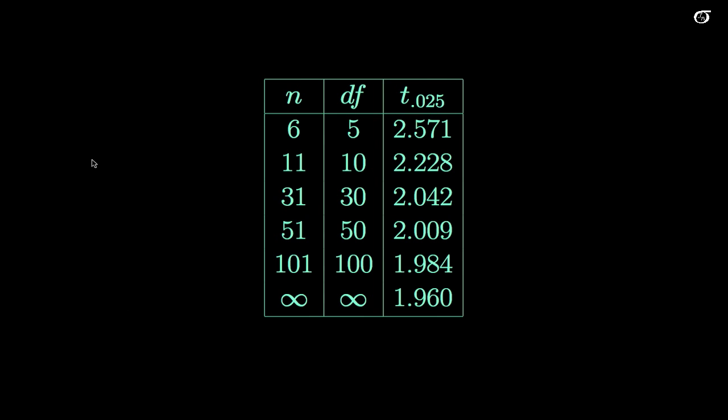So here we have a situation where recall that our z 0.025 is 1.96, and let's compare these t distribution values. So here if we have a sample size of 6, then we have 6 minus 1 or 5 degrees of freedom, and the t 0.025 value is actually quite a bit bigger than that 1.96. But as our sample size increases...